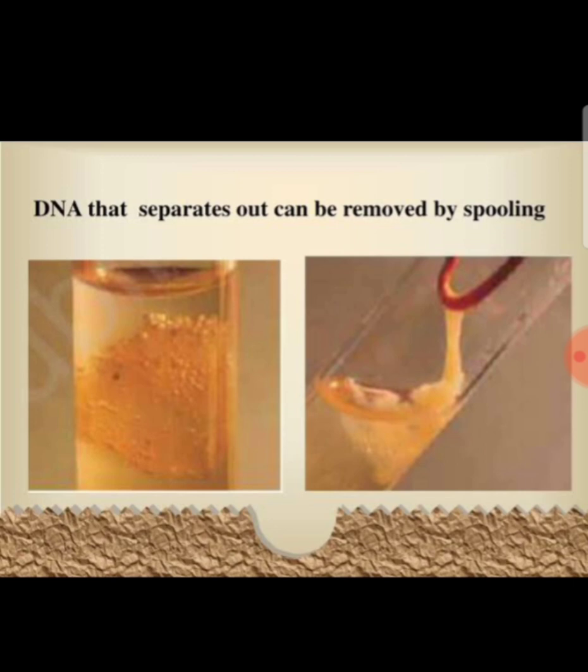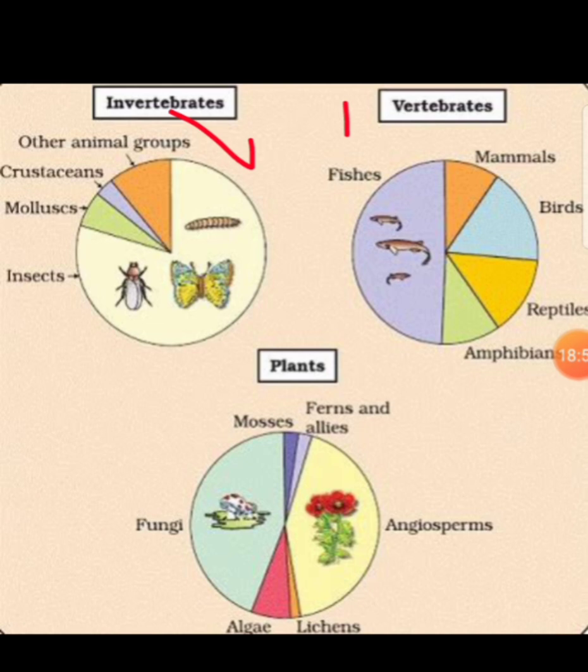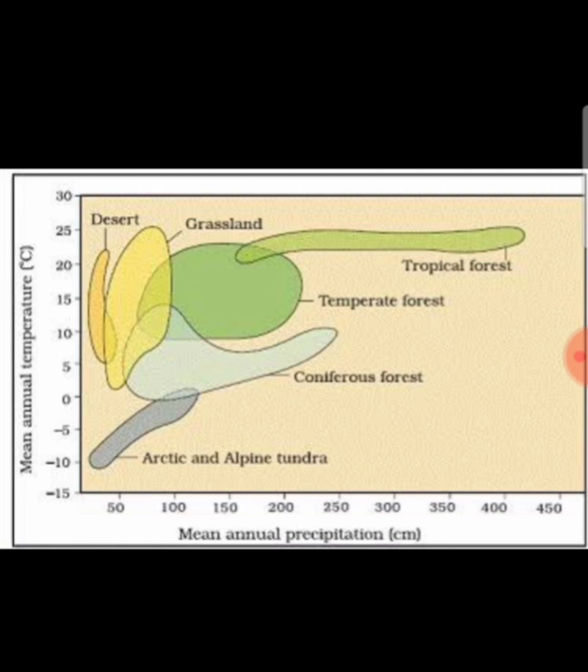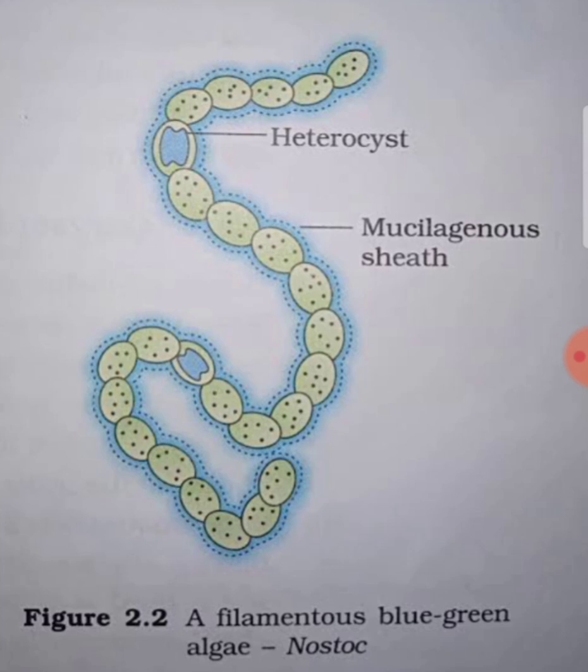In biodiversity, you can find the distribution of invertebrates, vertebrates, and plants. This graph shows the species-area relationship, and the different biomes shown include desert, grassland, tropical forest, temperate forest, coniferous forest, and arctic and alpine tundra.